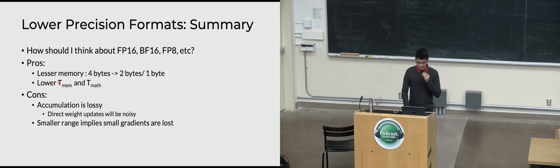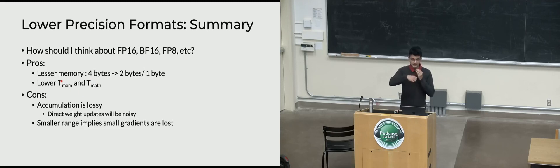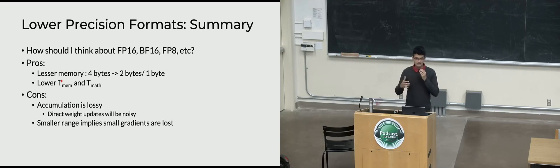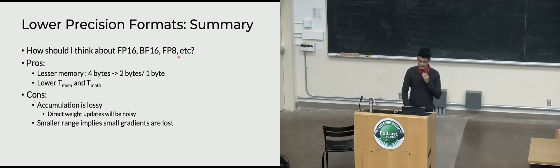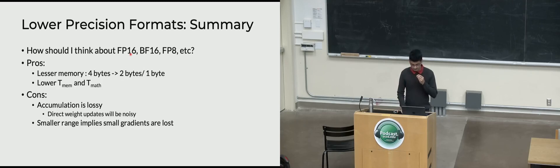Lower precision formats have lower T_mem and T_math advantages because you access less memory in HBM and can operate faster, but the problem is accumulation is lossy — you can't add many values together without losing information, so direct weight updates can't happen. Small range implies small gradients are lost. This is the main trade-off when reading papers on how FP8 or FP16 works.